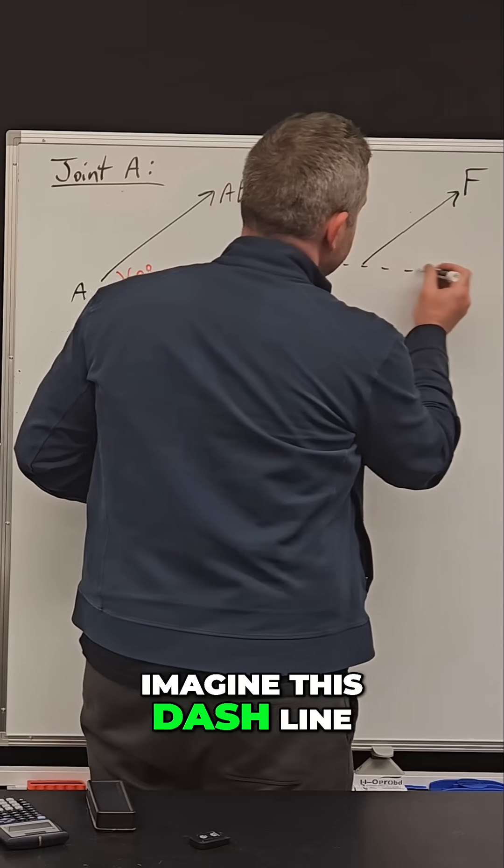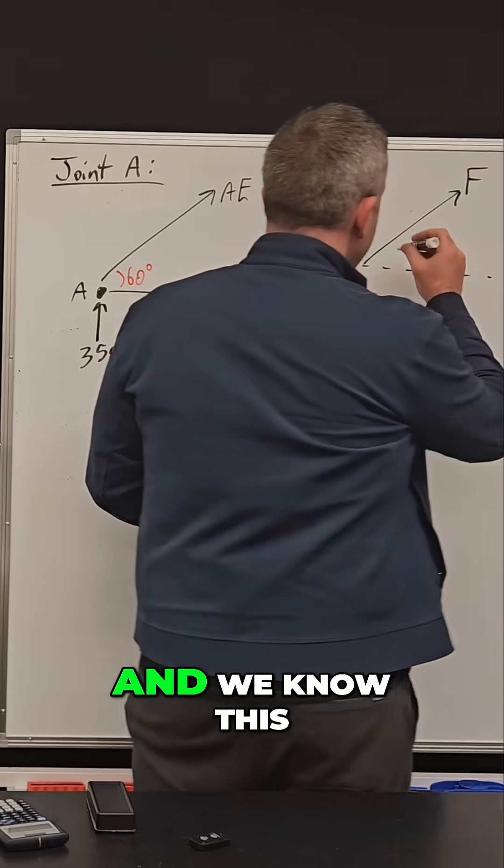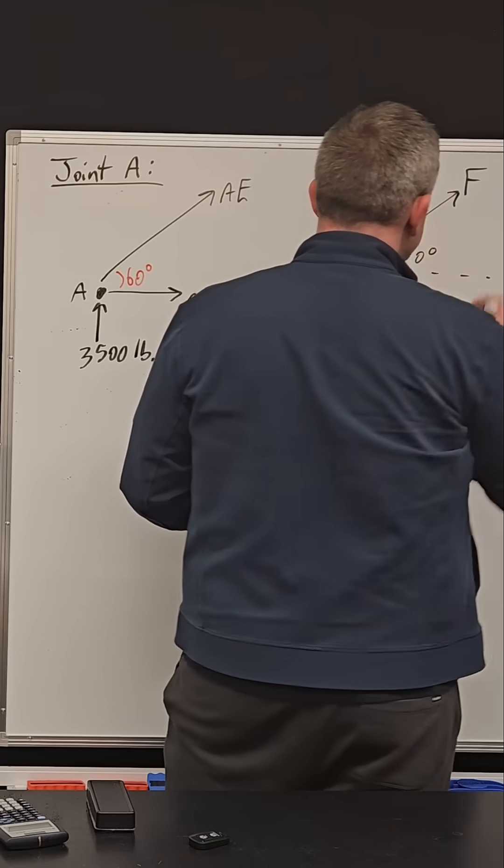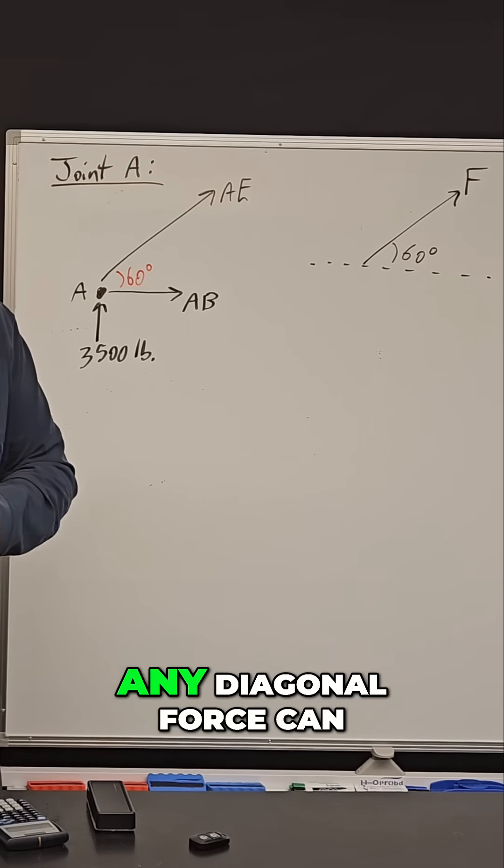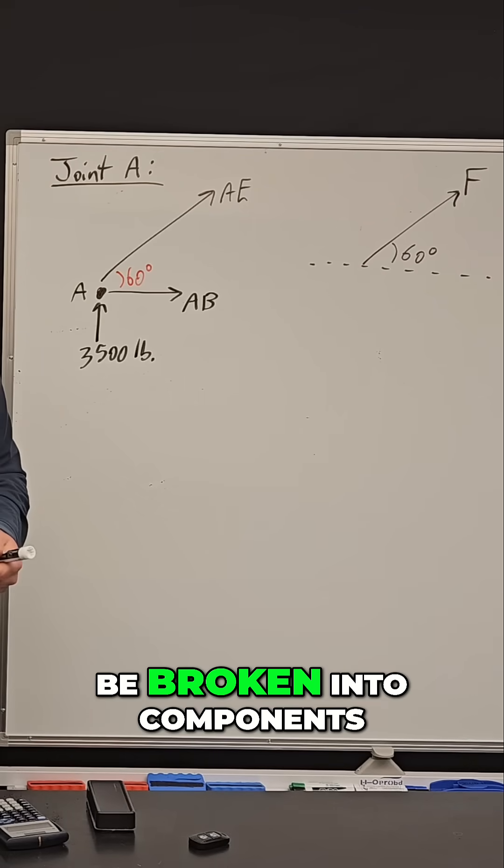And so if you imagine this dashed line is like a reference point, and we know this is a 60 degree angle, any diagonal force can be broken into components.